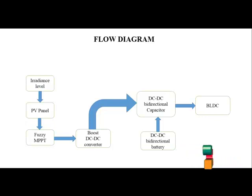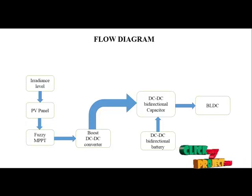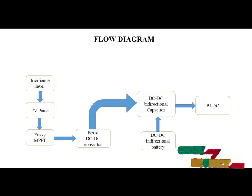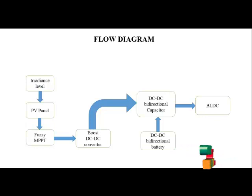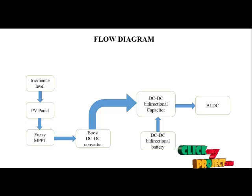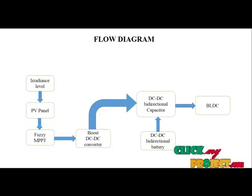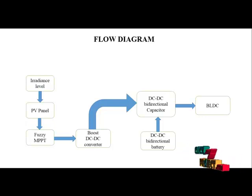After that, we use the boost DC-to-DC converter to improve the voltage from the PV panel. Then the inverter stage uses a three-level inverter, with pulses generated via the MPPT method and PWM-based pulse generation. There are two storage systems — one capacitor and one battery — connected in bidirectional form. We also use a BLDC motor. From the PV panel, the voltage is improved and passed through the inverter.